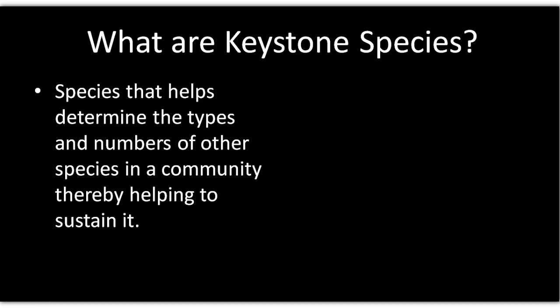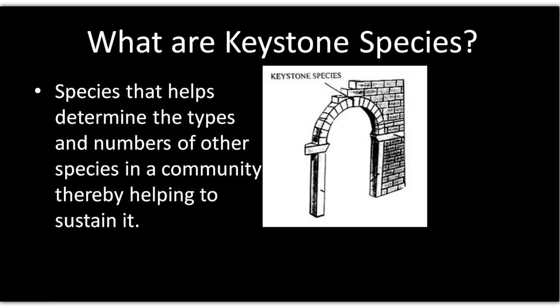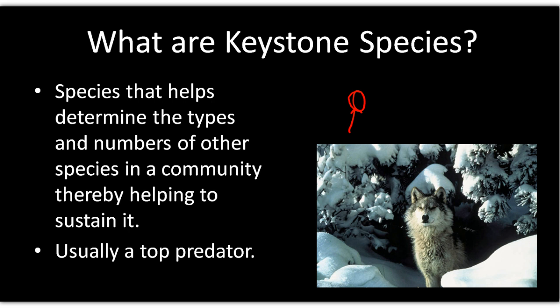A keystone species is one whose removal or disruption can have a large impact on the community because of its role with species above or below it. Keystone species are typically found at the top of the ecosystem as a top predator — if removed, the whole structure of the community could collapse. A good example is the wolf. Historically a top predator in North America, wolves kept prey populations in check. Pre-colonial deer populations were much lower than today, but because wolves compete with humans for deer, they've been hunted nearly to extinction in North America.